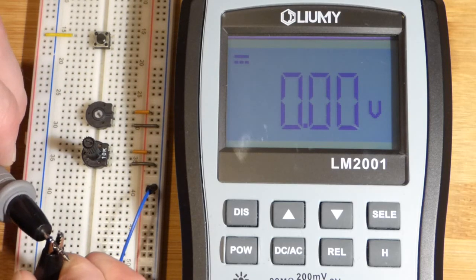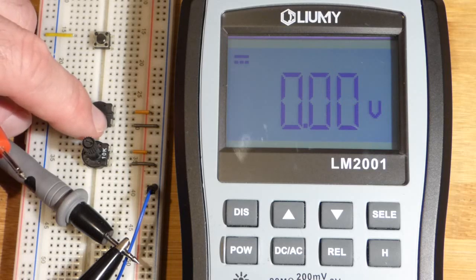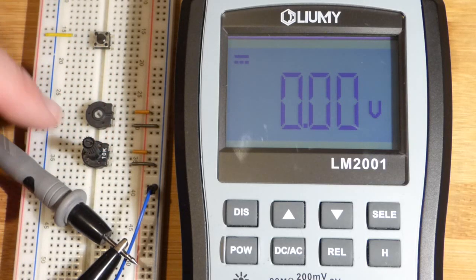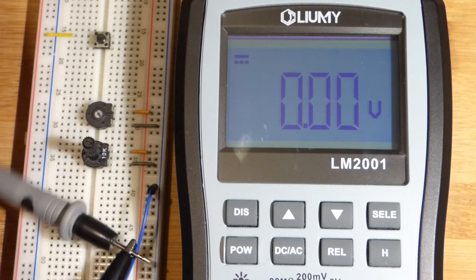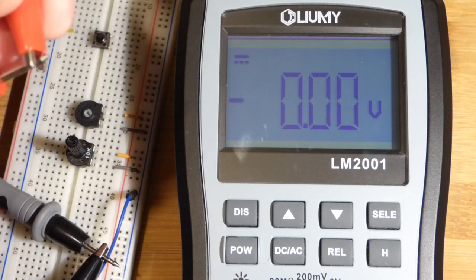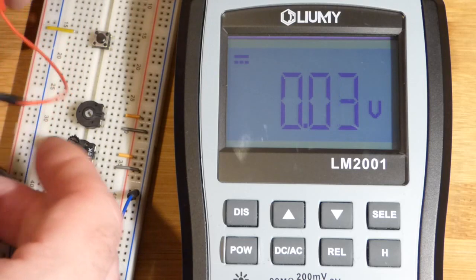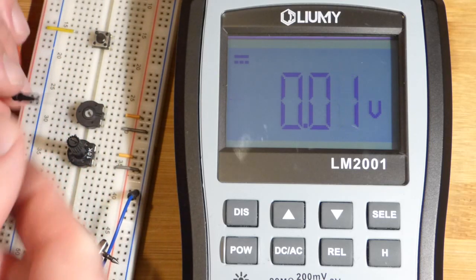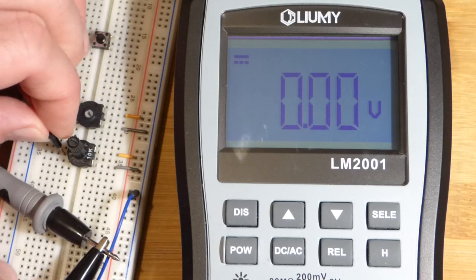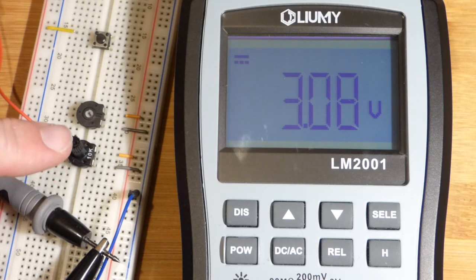There's current running through this one kilo ohm resistor and then current running through this 10 kilo ohm resistor. Nothing's coming out of the output of course because nothing's connected to it. So now I'm going to clip this here. First, let's do the 10 kilo ohm. So I'll plug this jumper into there - that's the same row that the output is in. So now you can see this is about halfway, a little closer to the positive.